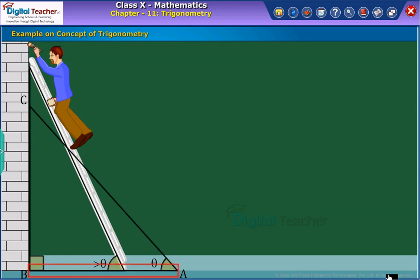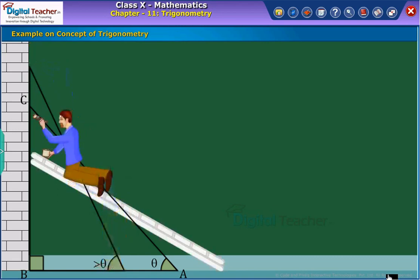If the person desires to whitewash at a lower point on the wall, what happens to the angle made by the ladder with the ground? What will be the change in the distance AB?